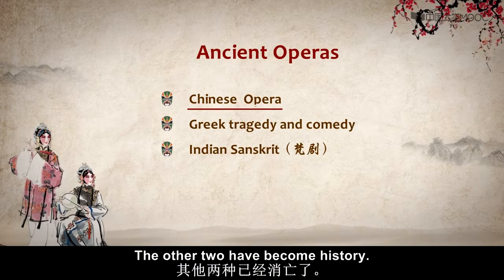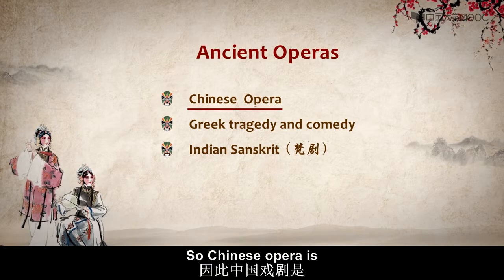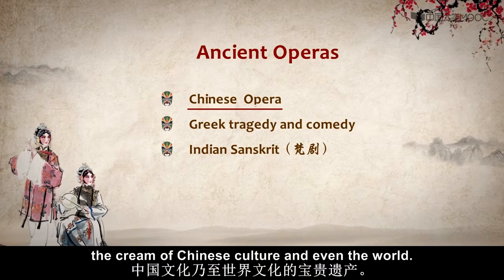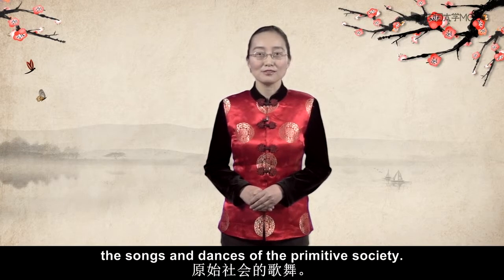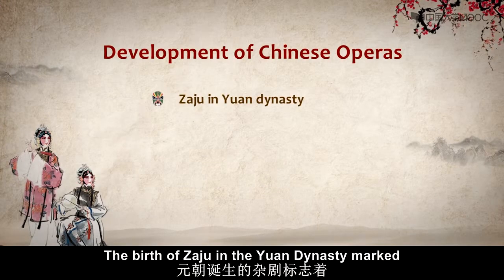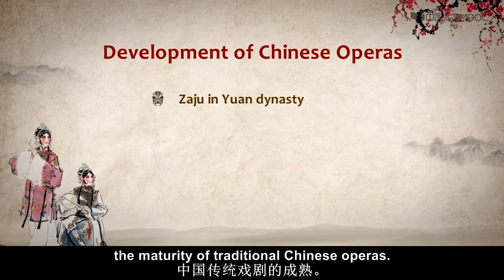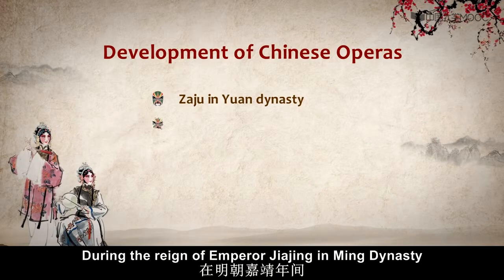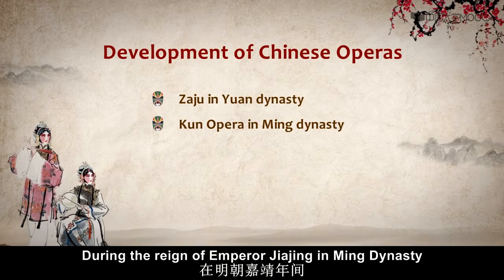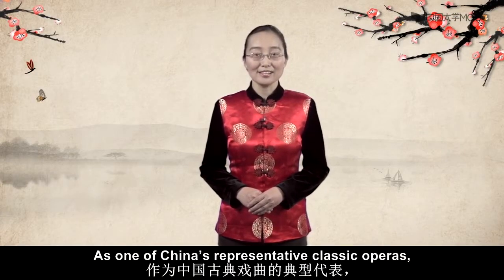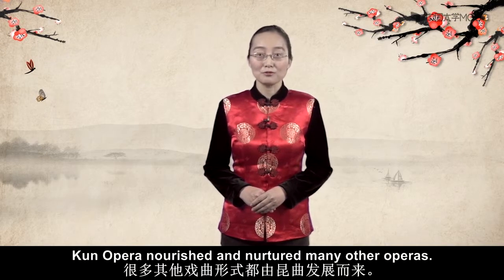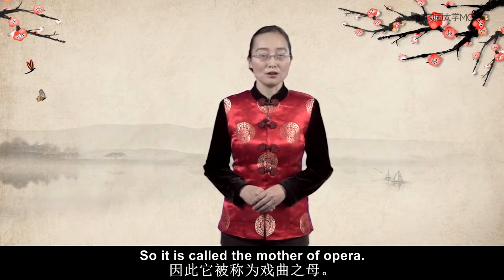The other two have become history. So, Chinese Opera is the cream of Chinese culture and even the world. Chinese Operas came from the songs and dances of the primitive society. The birth of Zha Ju in the Yuan Dynasty marked the maturity of traditional Chinese operas. During the reign of Emperor Jia Jin in Ming Dynasty, Kun Opera came into being. As one of China's representative classic operas, Kun Opera nourished and nurtured many other operas, so it is called the mother of opera.